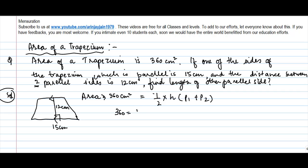Or 360 is equal to 1 by 2 into height. Height is how much? 12 centimeter, into P1, 15 plus P2. 2 goes into 12, 6 times. So we get 360 is equal to 6 into 15, 90 plus 6 times P2.